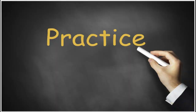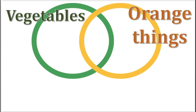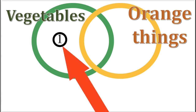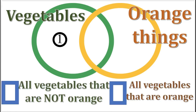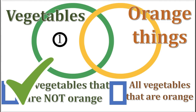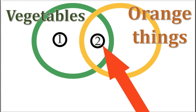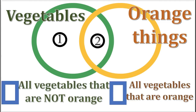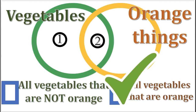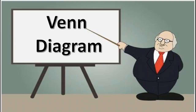Alright, let's work a few practice problems. Practice problem number 1: this circle represents vegetables, and this circle represents orange things. What does area 1 contain? The answer is: vegetables that are not orange. What does area 2 contain? The answer is: orange vegetables. Good job! Let's continue with Venn diagrams.